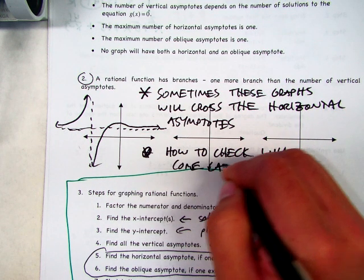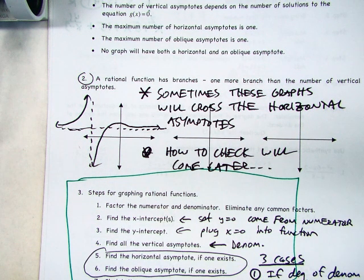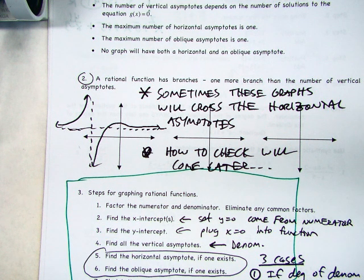Are there any questions so far on the details? There's a lot of stuff that goes into graphing these, which is why it's kind of hard. But if you follow the process and stick with those steps every time, you should be okay.